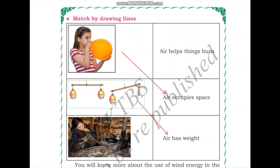The third diagram shows lighting a gas by blowing air on it. This demonstrates the property that air helps things burn. When you blow on a stove or anything burning through a pipe, it helps the ignition process. So this property is: air helps things burn.